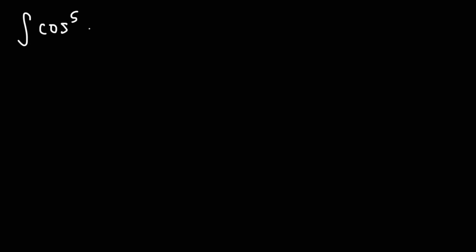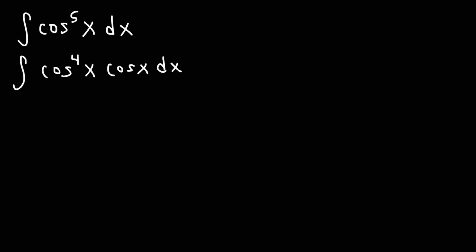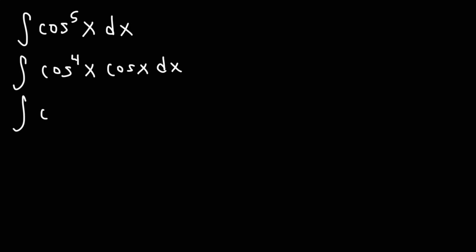Now let's work on a similar problem that's a little bit harder: cosine raised to the fifth of x. So what we're going to do is take out a cosine, giving us cosine to the fourth times cosine x dx. We need to change cosine into sine, but we need cosine squared first. Cosine to the fourth is cosine squared squared.